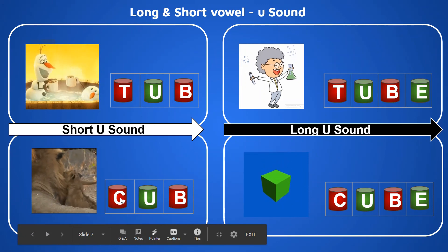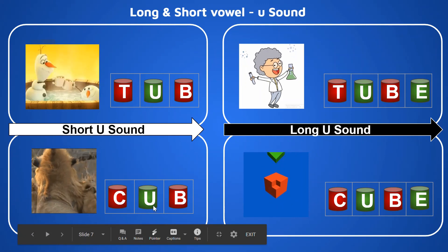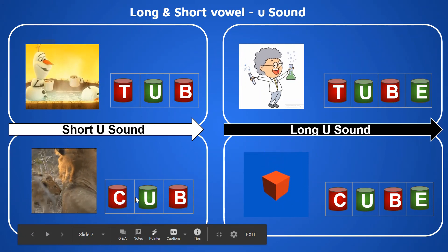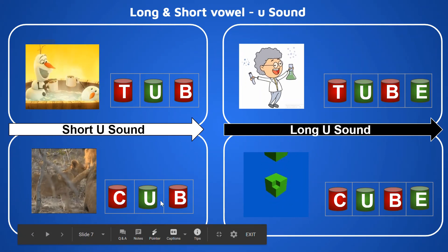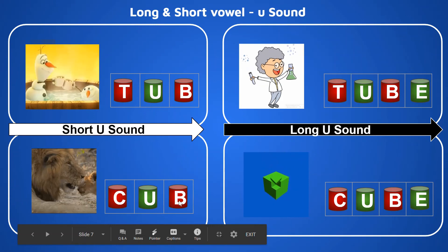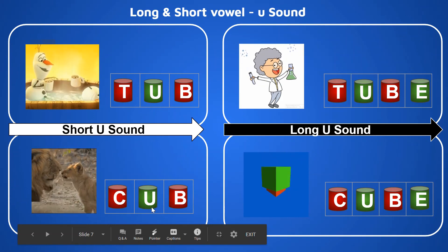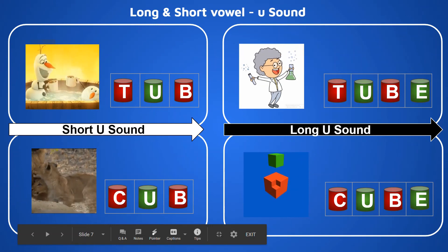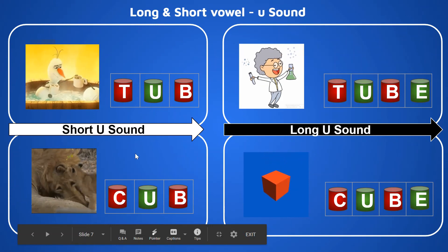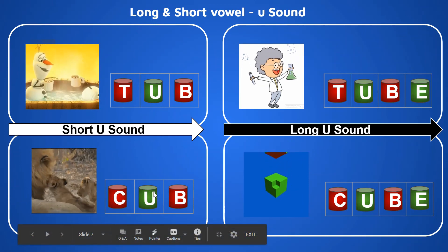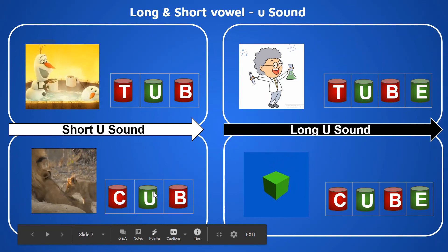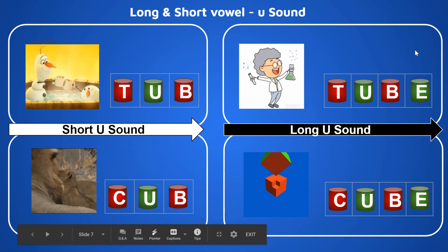To contrast: C, U, B — 'cub', that is the short sound of alphabet U. C, U, B, E — 'cube', that is the long sound. Thank you!